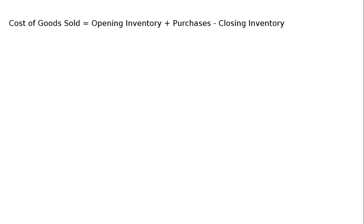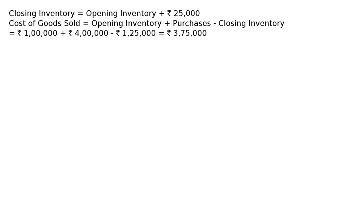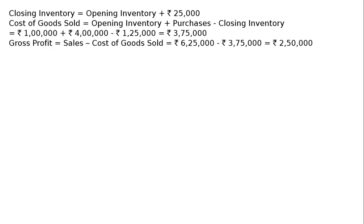Cost of goods sold equals opening inventory plus purchases minus closing inventory — this is the basic formula. Substituting values: rupees 1 lakh plus rupees 4 lakhs minus rupees 1 lakh 25 thousand equals cost of goods sold of rupees 3 lakhs 75 thousand.